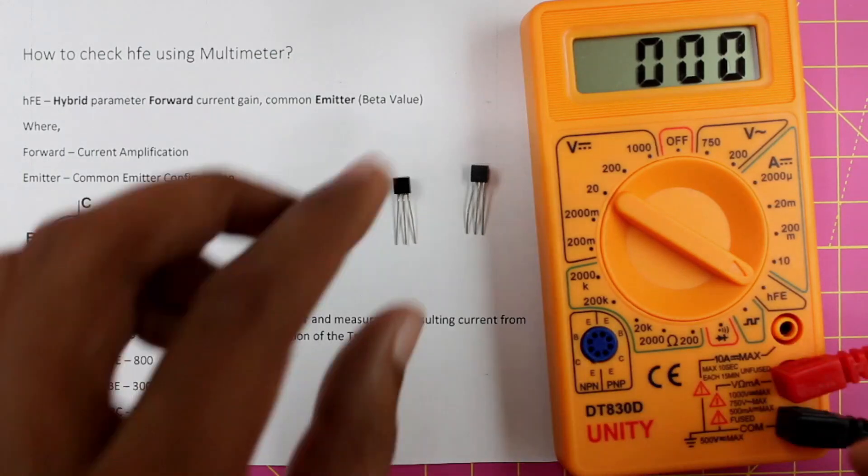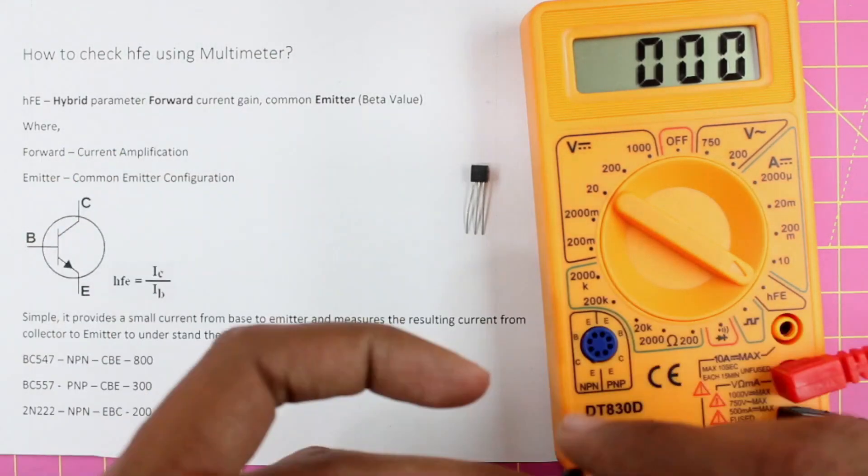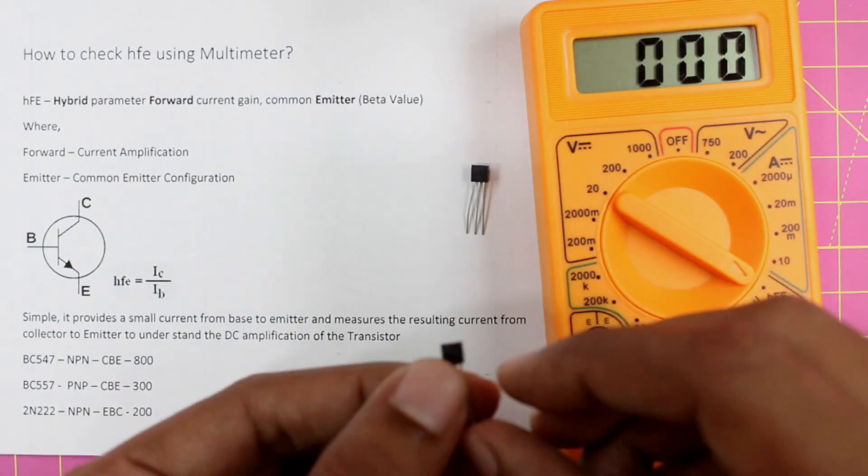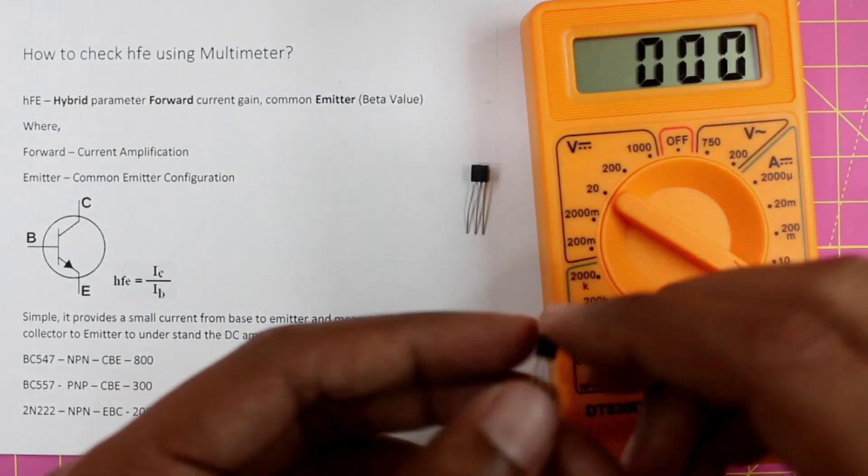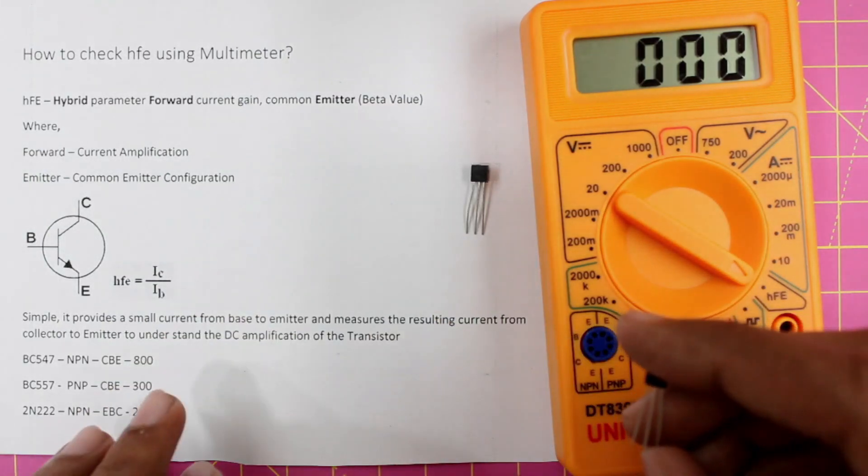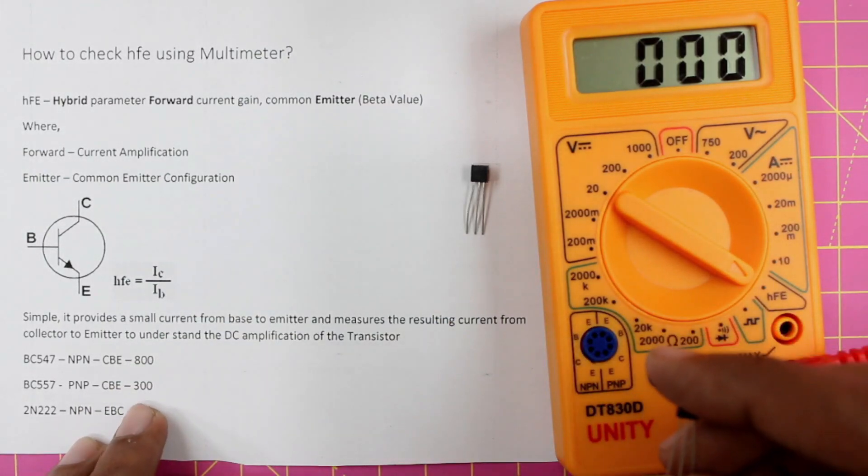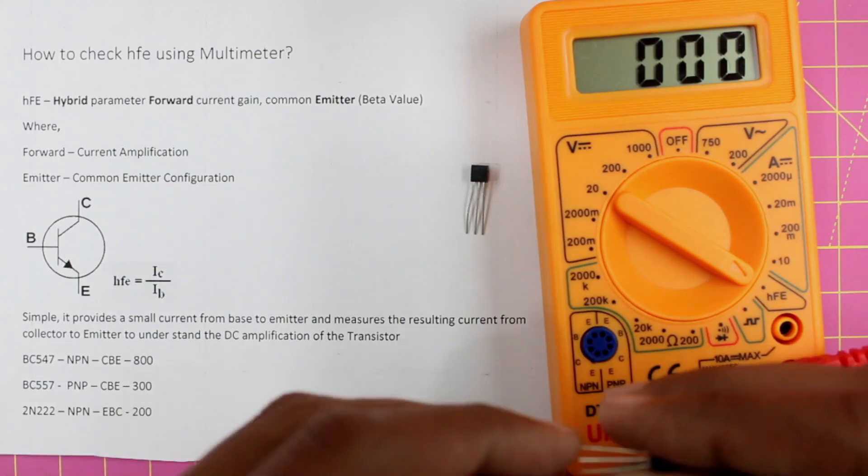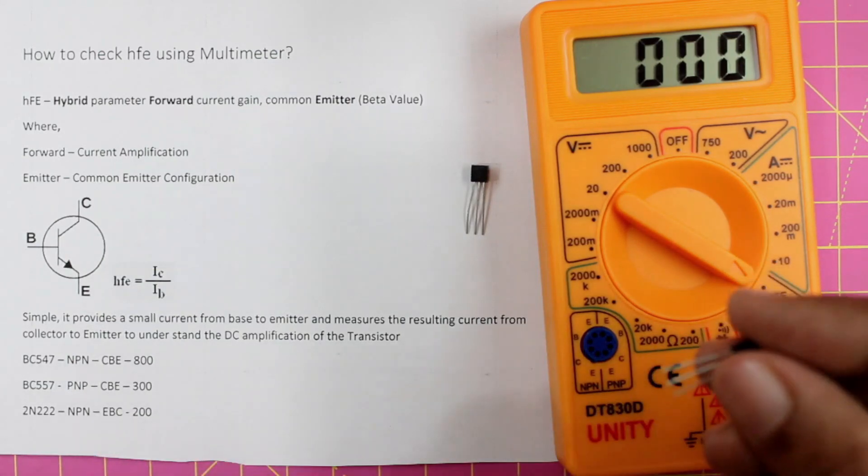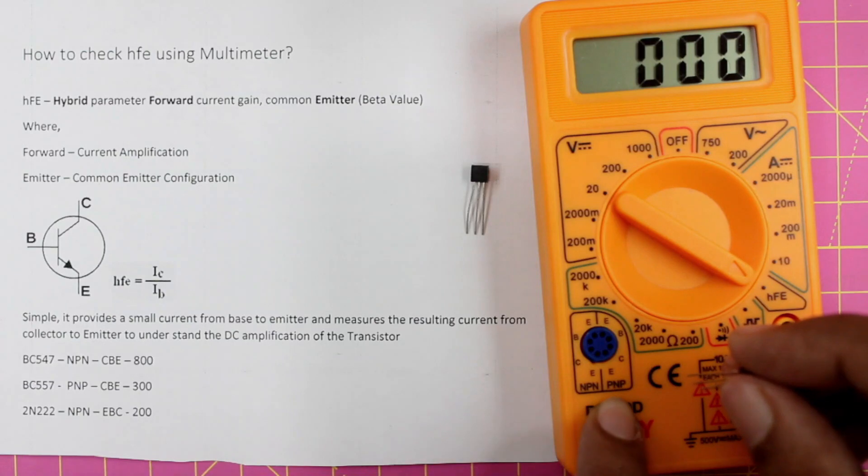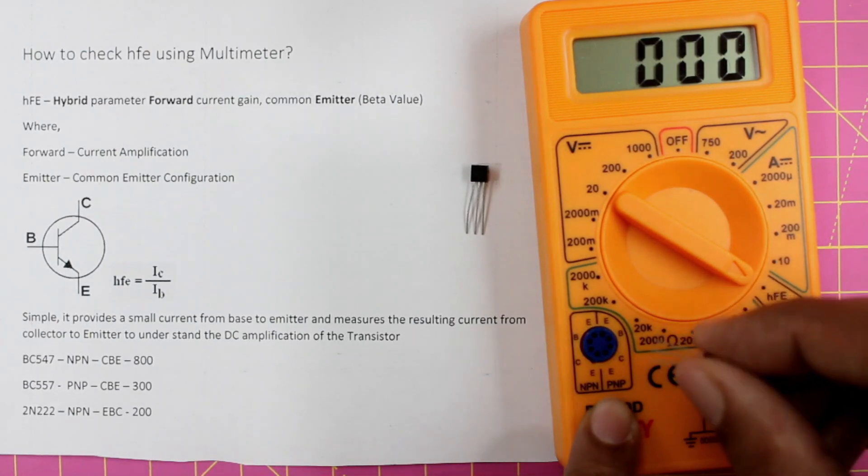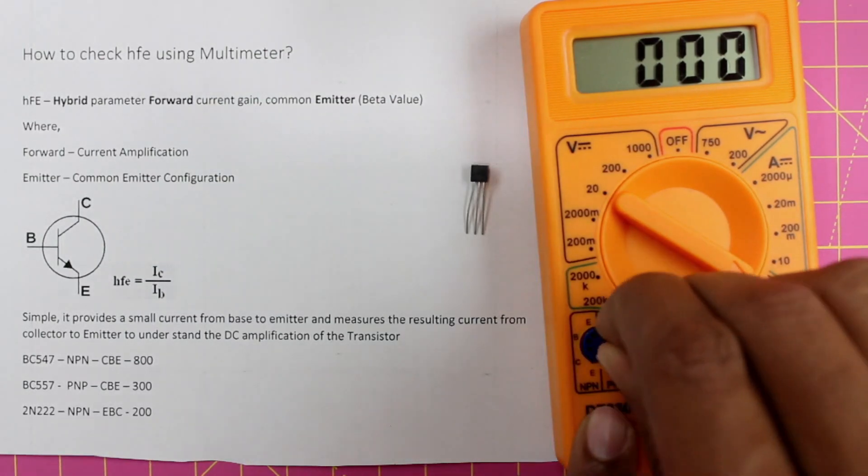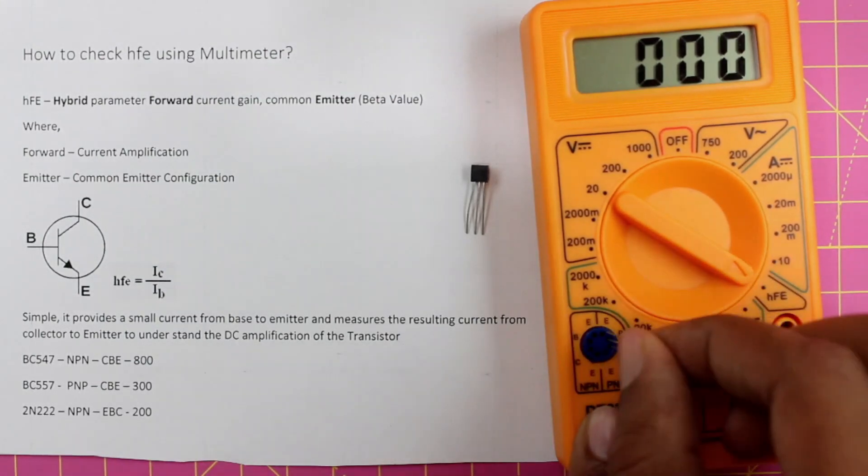Now let's measure with another transistor. This one here is the BC557 which is a PNP transistor. Again, terminals are collector, base, and emitter. The maximum beta value is 300 according to the datasheet. So now let's measure the beta value of this transistor. Find the PNP slot and then the first pin is collector, so insert your terminals accordingly: first pin is collector, base, emitter.